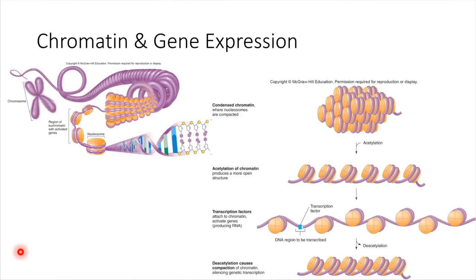Let's take a look at chromatin structure more carefully. This is how DNA is stored inside the nucleus — in the form of chromatin, which is very orderly and organized. Chromatin consists of DNA, shown in purple, wrapped around histone proteins, shown in orange. The DNA wrapped around a histone protein is called a nucleosome. Nucleosomes are a neat way to store DNA — they help prevent tangling and reduce the space DNA takes up.